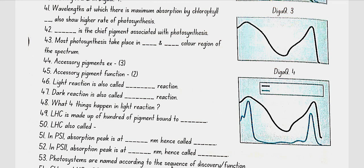Light reaction is also called photochemical reaction, and dark reaction is also called the carbon reaction. The four things that happen in light reaction are: light absorption, water splitting, oxygen release, and formation of high energy chemical intermediates ATP and NADPH.